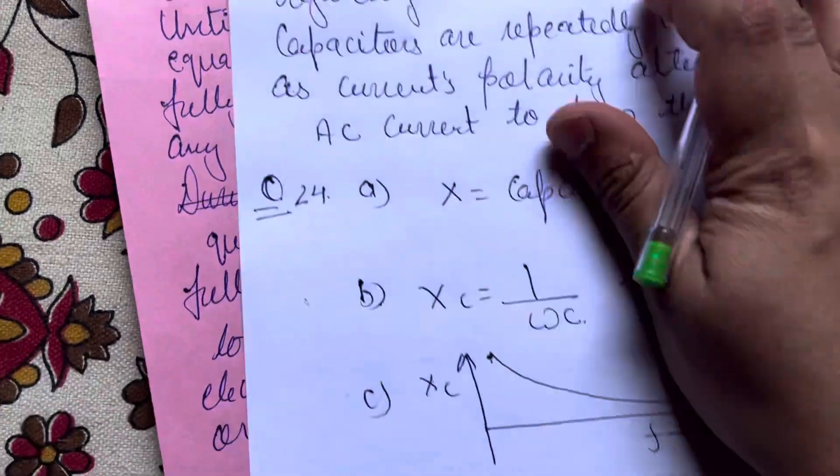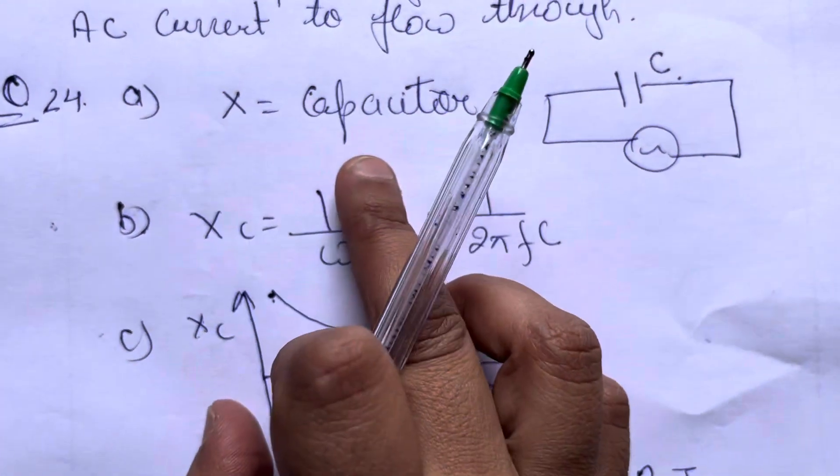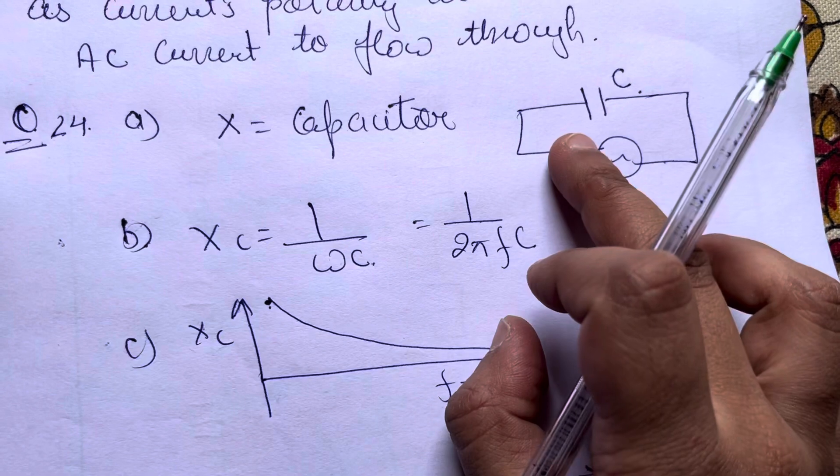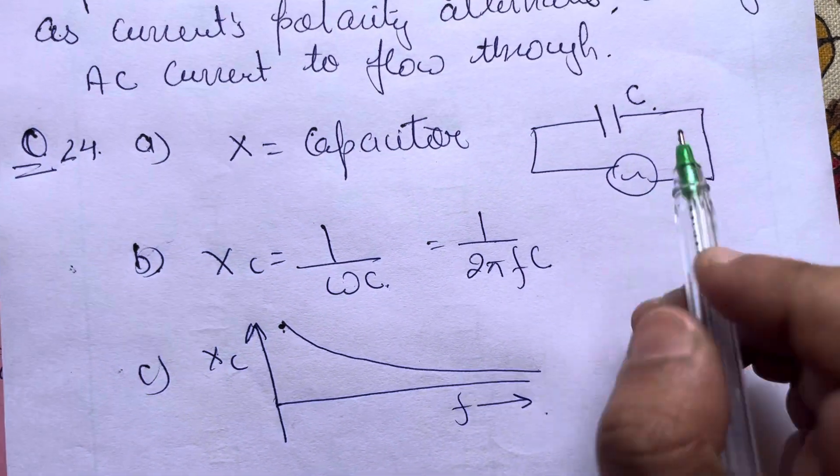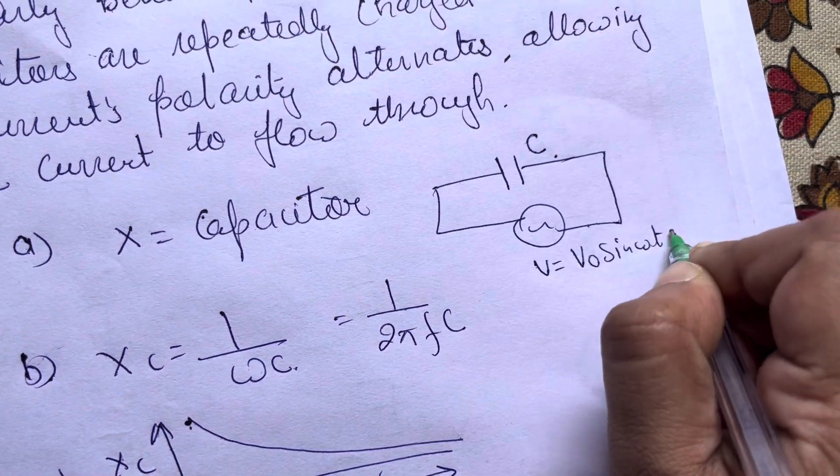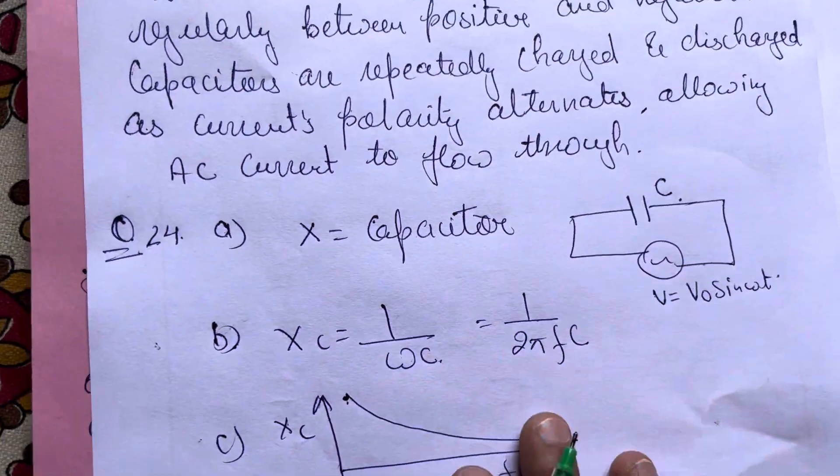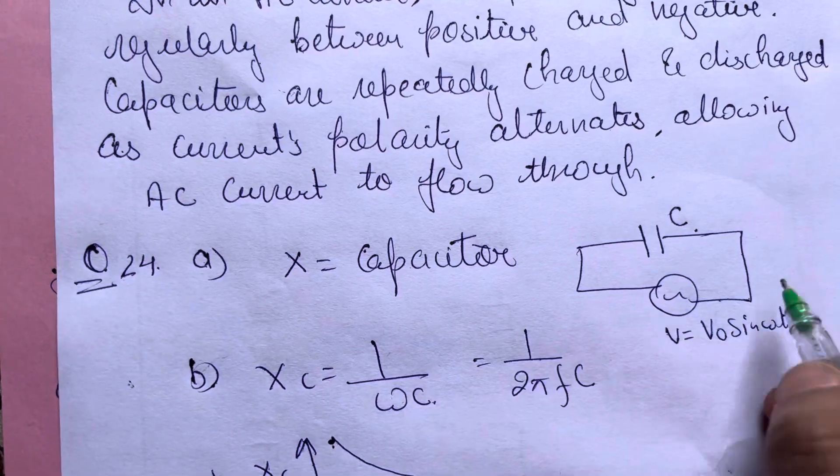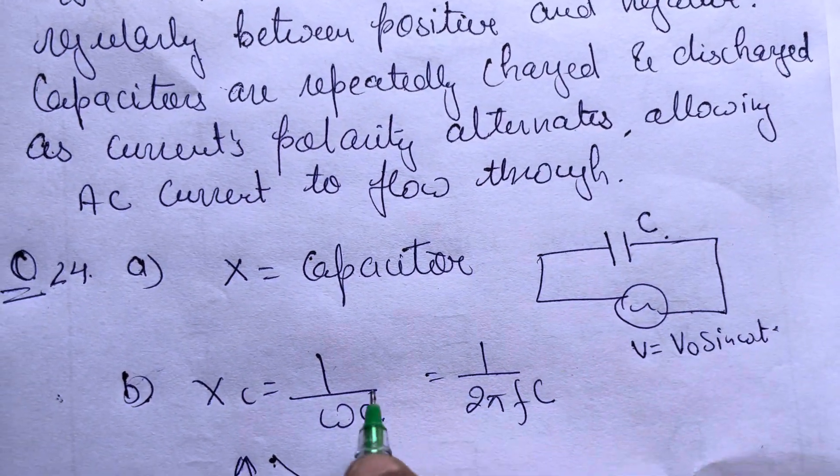This is our diagram with the capacitor. We have to apply the sinusoidal voltage V equals V₀ sin ωt.